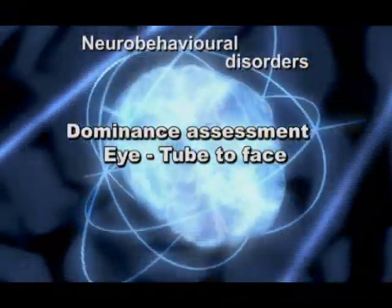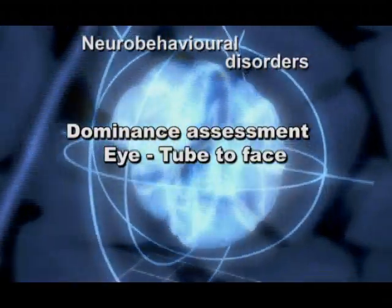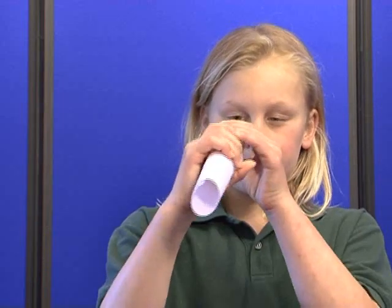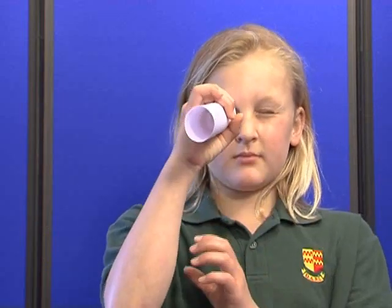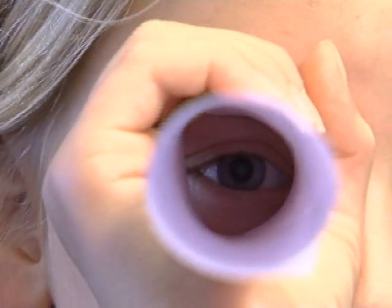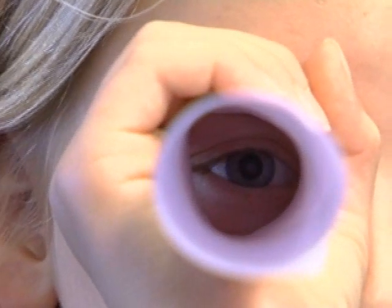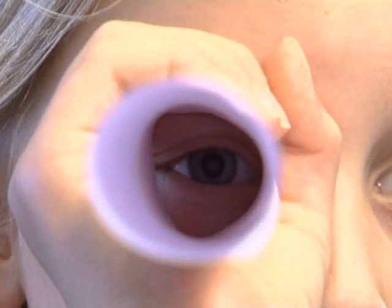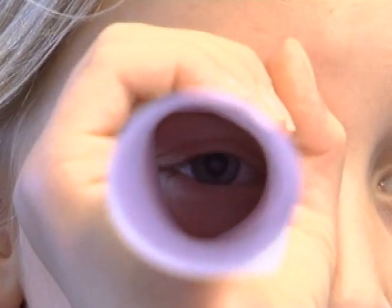The second eye test is the tube to the face. We're going to use a rolled up piece of paper like a telescope and Rachel is going to put it to her eye. We note here that the right eye is the dominant one.